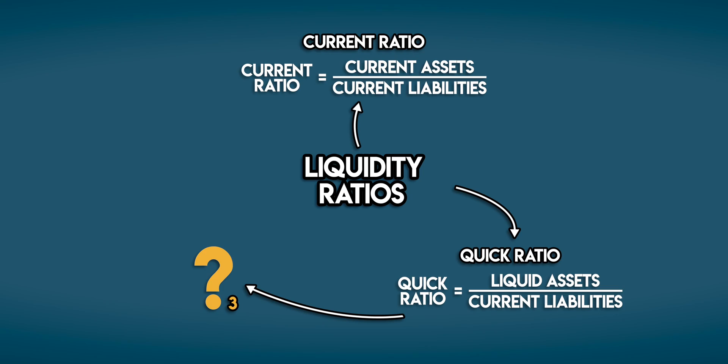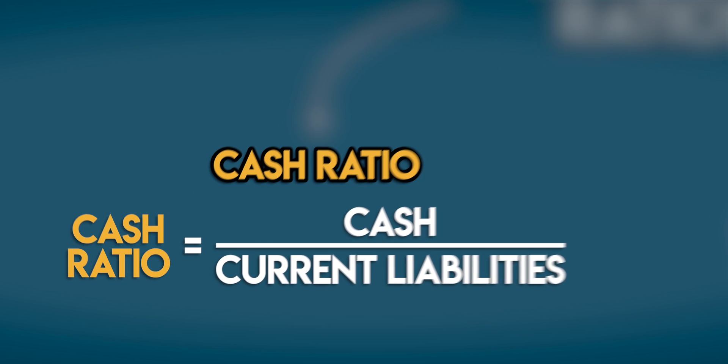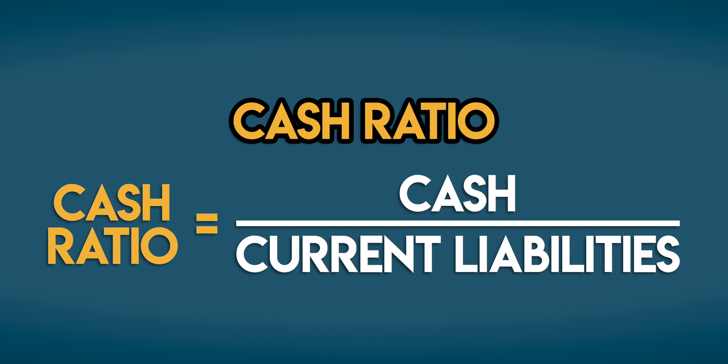Before we do this last one, you should know that I put together a liquidity ratios cheat sheet. It's on my website and you can find a link down in the description. The most conservative liquidity ratio is the cash ratio. We can calculate the cash ratio by taking cash and cash equivalents and dividing them by current liabilities.